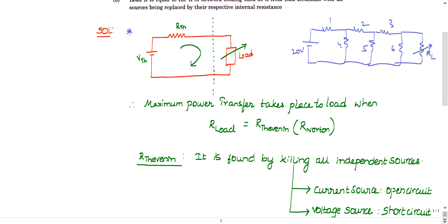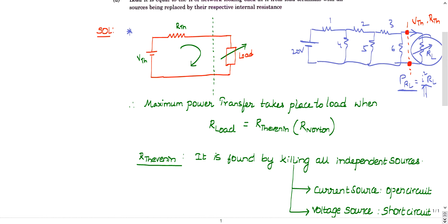Power of the load is I²R, so maximum power means maximum current to RL. To find when maximum current is delivered, you open the load terminals and calculate the Thevenin voltage and Thevenin resistance. You calculate VTH and RTH looking from the load terminals.